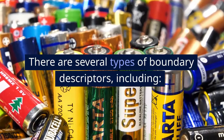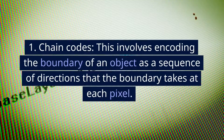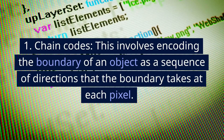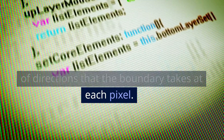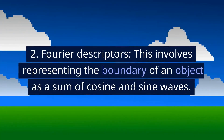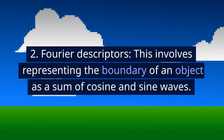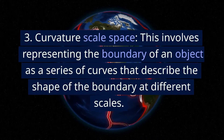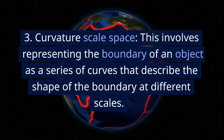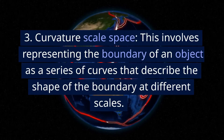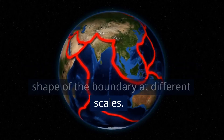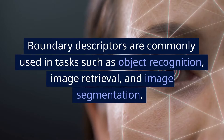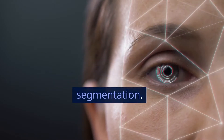There are several types of boundary descriptors, including: 1. Chain codes — encoding the boundary of an object as a sequence of directions that the boundary takes at each pixel. 2. Fourier descriptors — representing the boundary of an object as a sum of cosine and sine waves. 3. Curvature-scale space — representing the boundary as a series of curves describing the shape at different scales. Boundary descriptors are commonly used in tasks such as object recognition, image retrieval, and image segmentation.